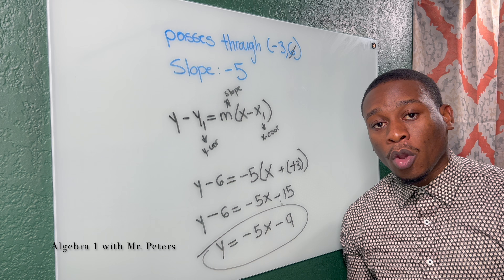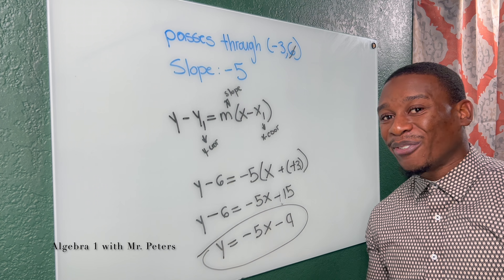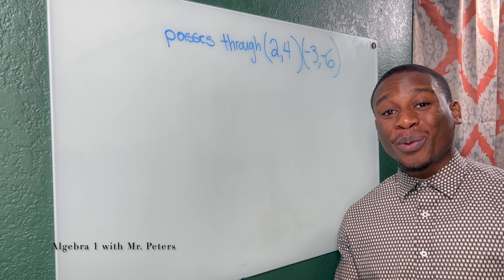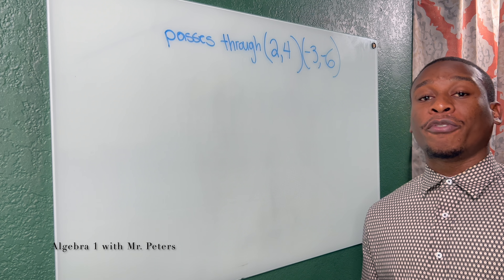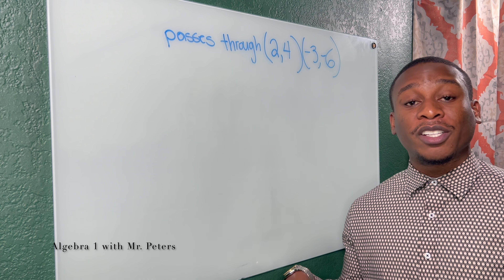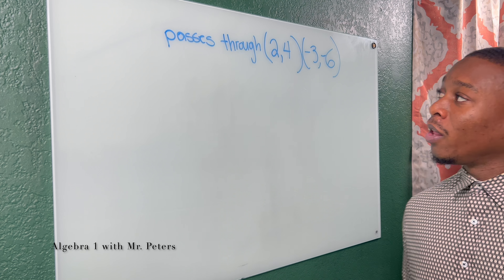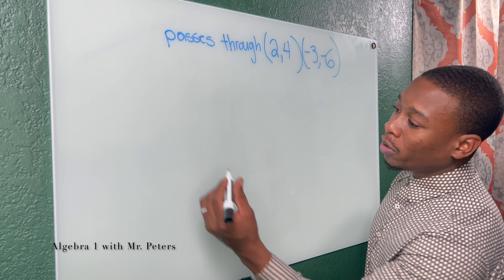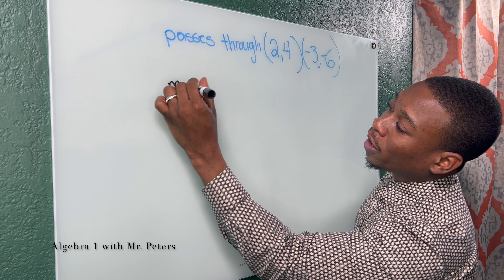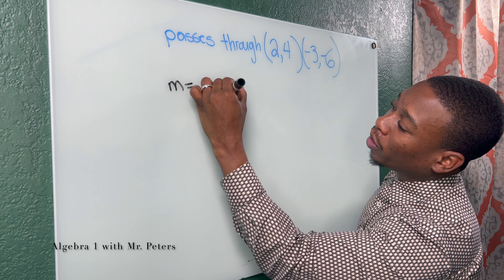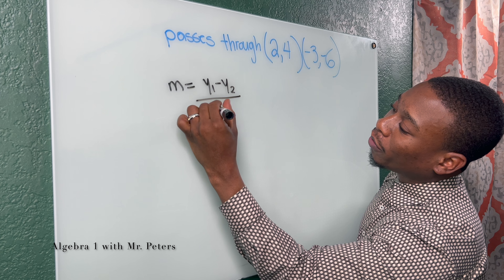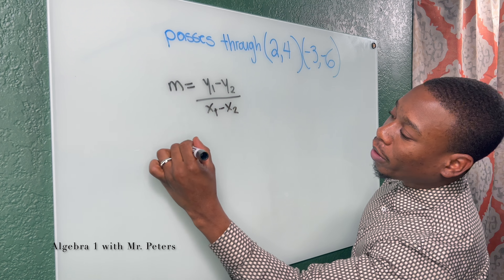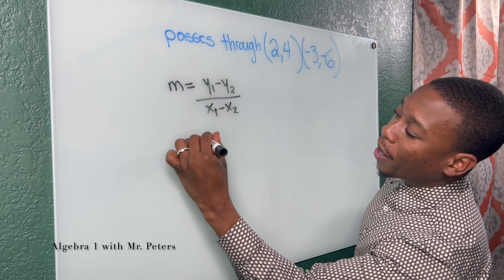But in part two, we're going to look at a different scenario. Now, what they normally like to do is give us two points and tell us to create the equation. What we have to understand is that we do not have the slope. So the first thing we need to do is to use the slope formula: Y1 minus Y2 divided by X1 minus X2. Once we do that, we're going to have the following.